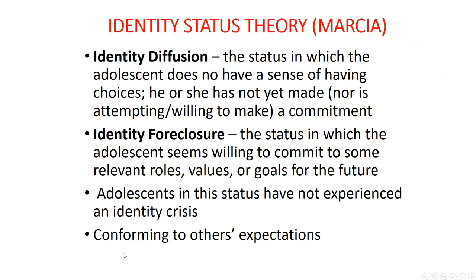Identity diffusion applies to adolescents — and also to adults. In identity diffusion, the person has not gone through a period of exploration and has not made any commitment. On the course website there is a clip describing a character from a Tarantino movie named Floyd, who serves as the archetype for identity diffusion. Identity foreclosure means the person has not gone through exploration but is committed to a certain role or goal.